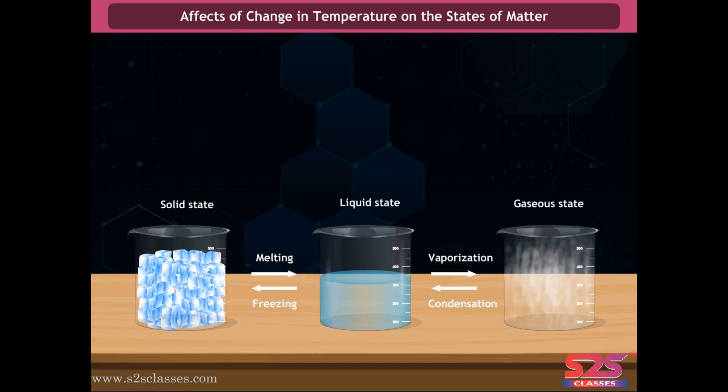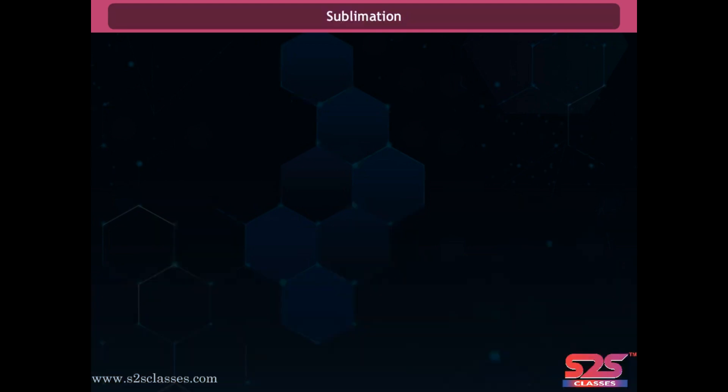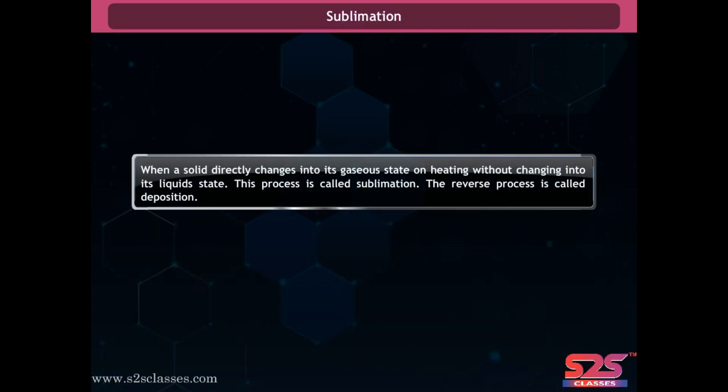This is because the kinetic energy decreases. From this activity we conclude that the state of matter is inter-convertible on changing the temperature. Sublimation: when a solid directly changes into its gaseous state on heating without changing into its liquid state, this process is called sublimation. The reverse process is called deposition.